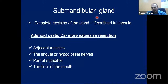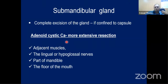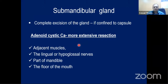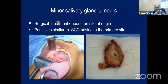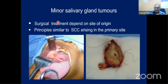The same surgical principles apply for the submandibular gland - complete excision if confined to the capsule. More extensive resection may be required if extending beyond the capsule, including adjacent muscles, part of the mandible or floor of the mouth, and the lingual nerve. For minor salivary gland tumors, the surgical treatment depends on the site. Prophylactic neck dissection need not be routinely done.